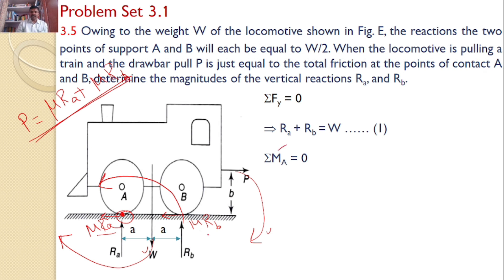Hence, I can calculate the moments. So, upon calculating, I will get W into A and P into B. Both are acting in the same direction. So, W into A plus P into B is equal to Rb into the perpendicular distance is 2A.